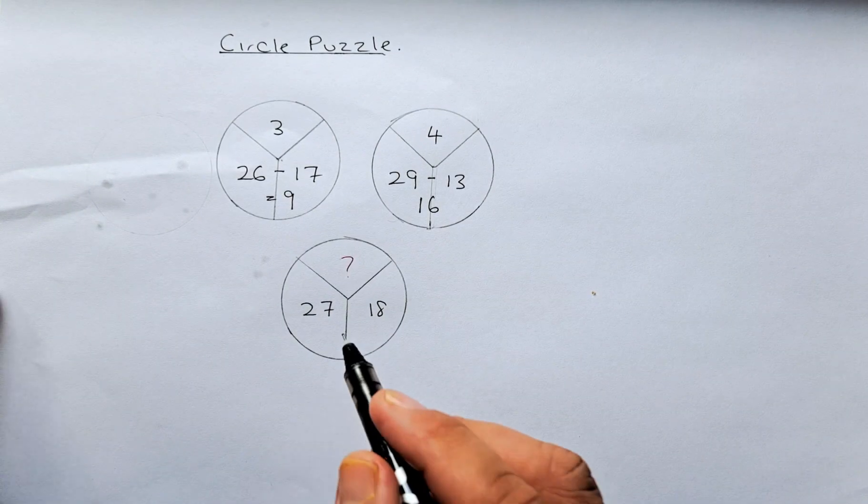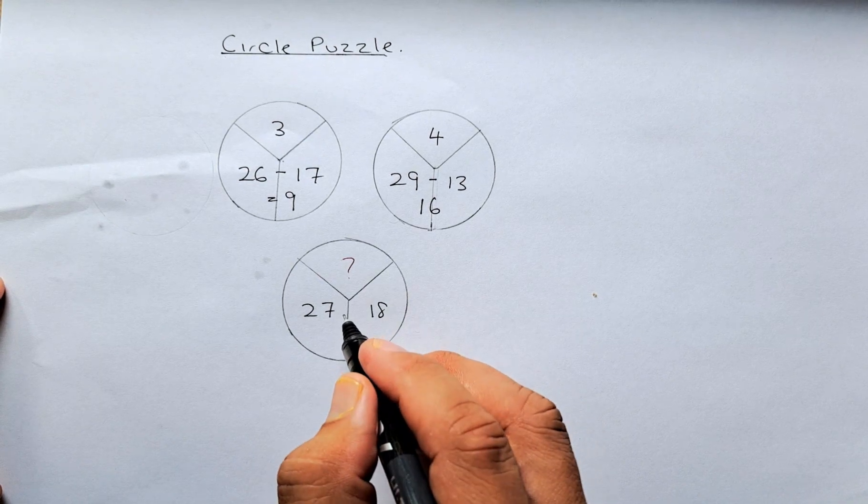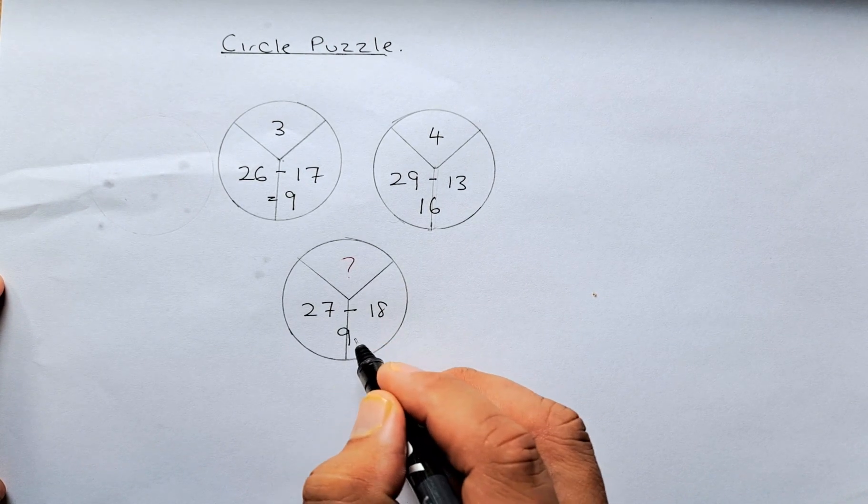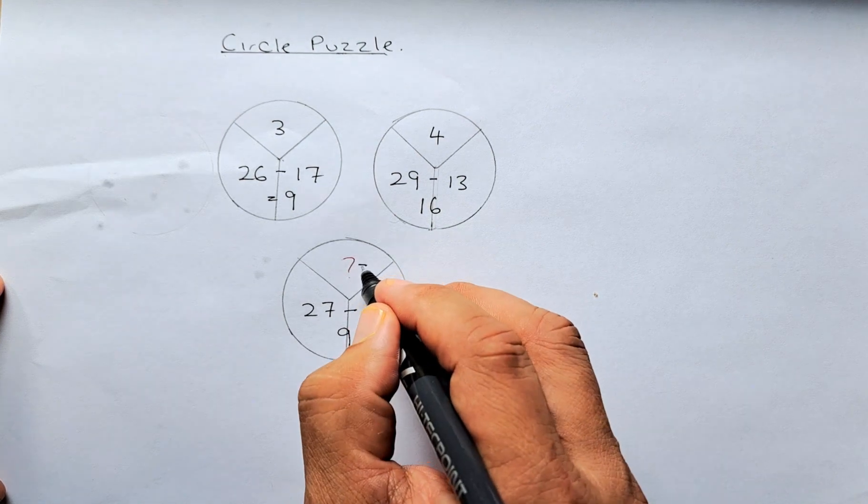So technically our answer here will be the same. 27 minus 18 is going to be 9 again. So the square root of 9, the answer is going to be 3.